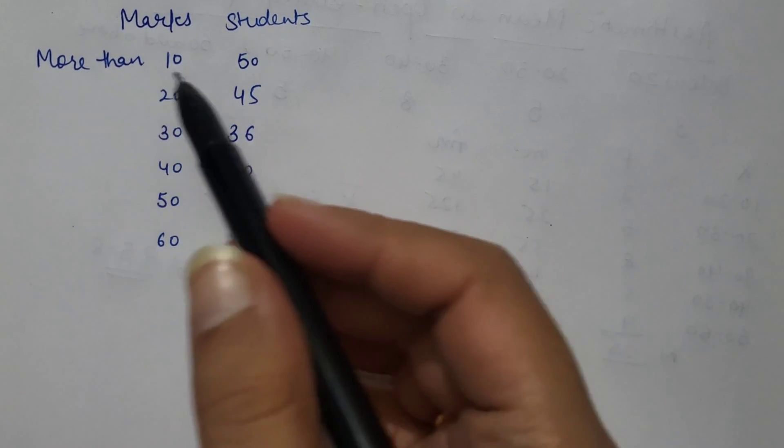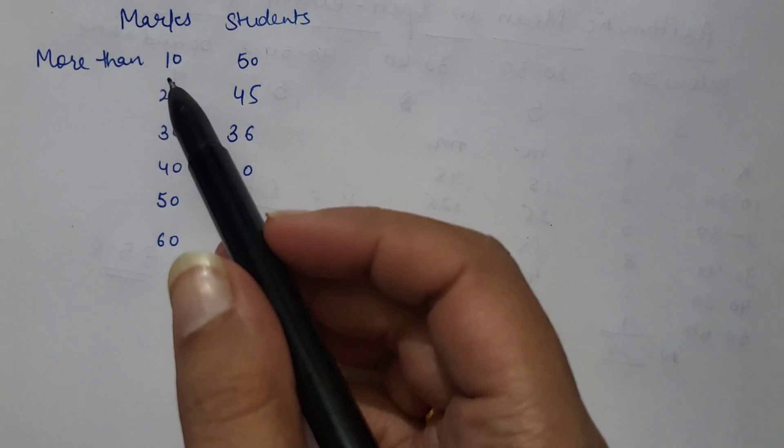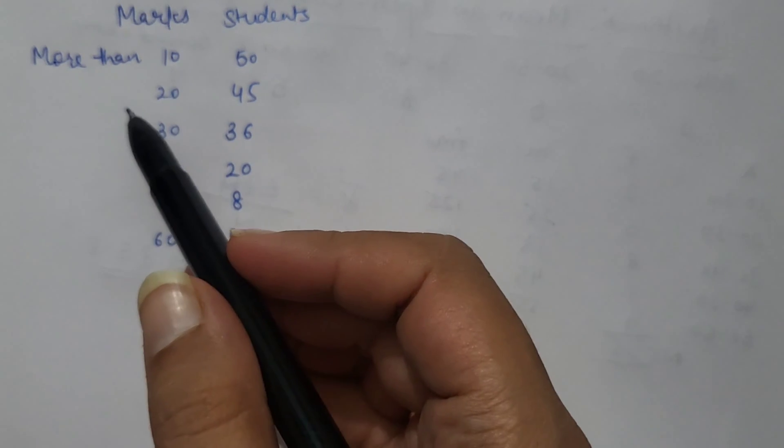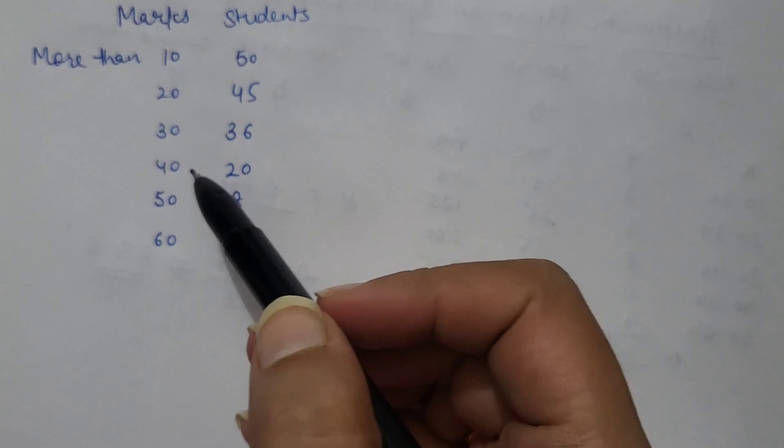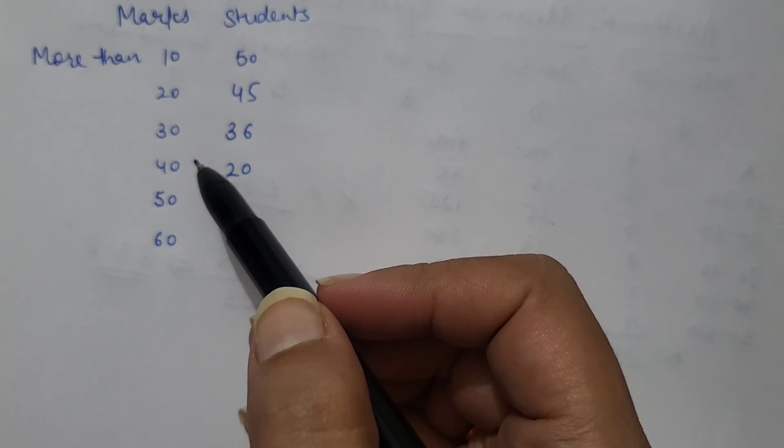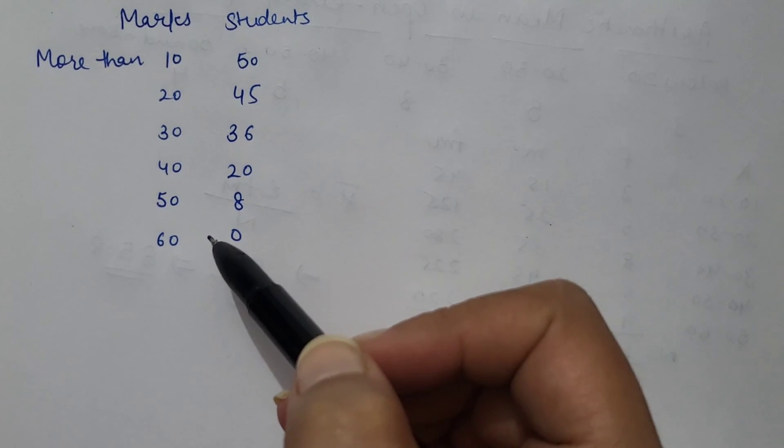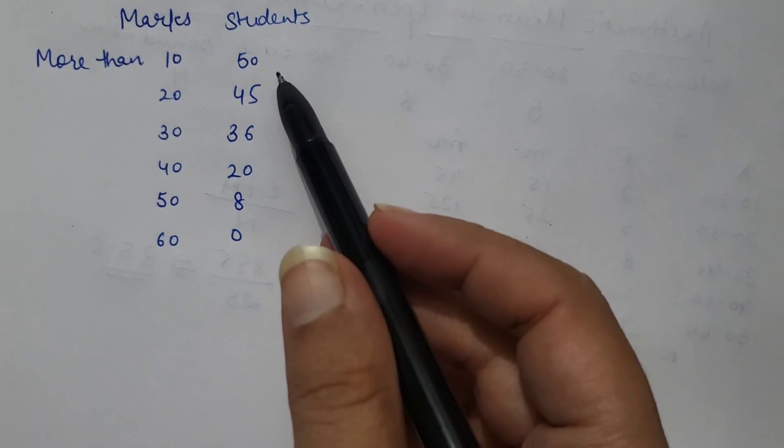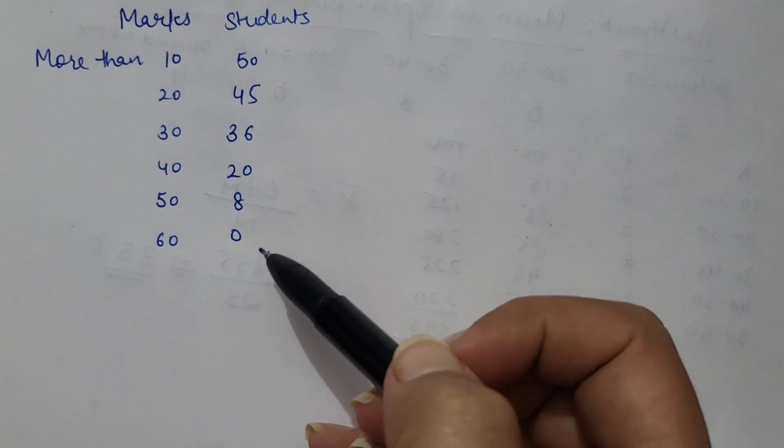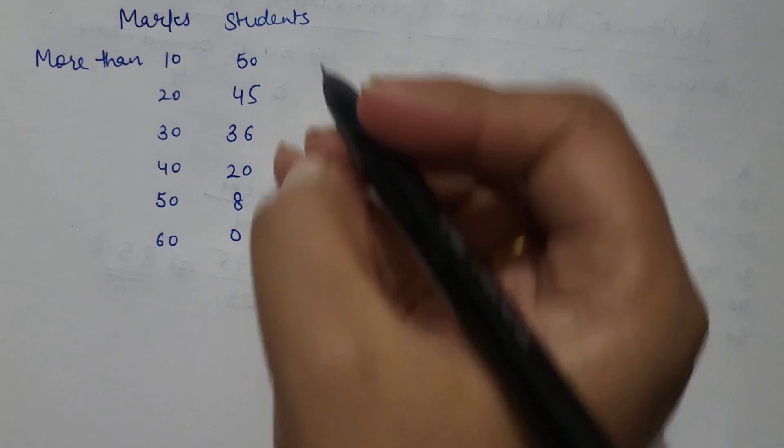This is the example of more than series. Here, more than 10, more than 20, more than 30, more than 40, 50, and 60. And data is reducing. So it is also cumulative frequency. First, we will adjust the data.